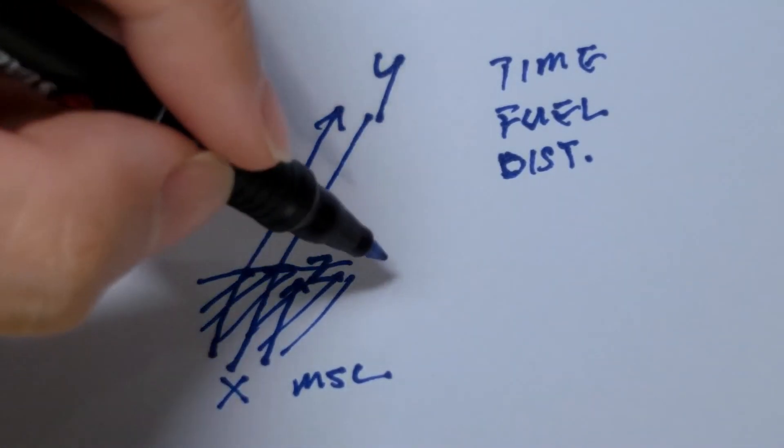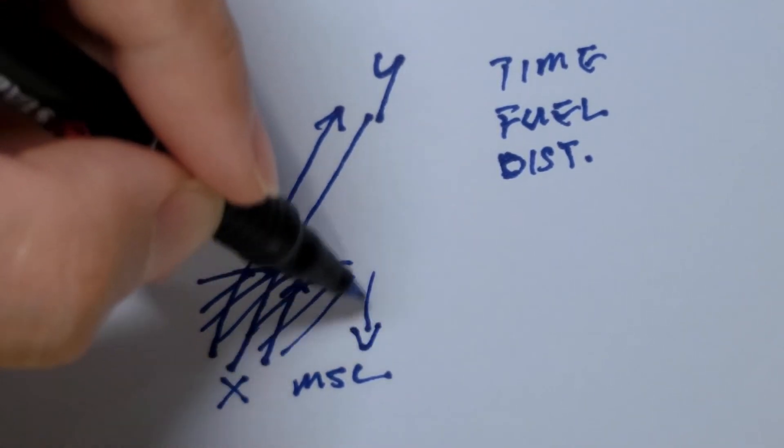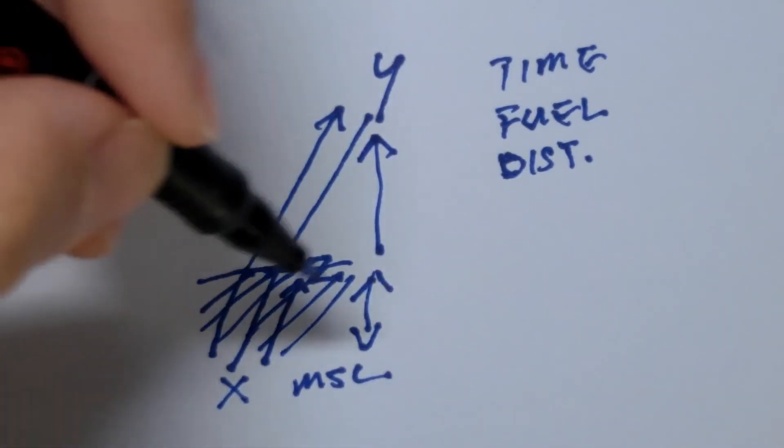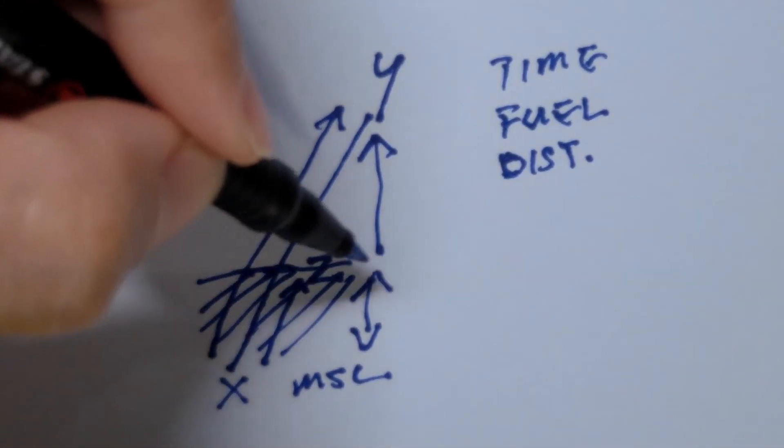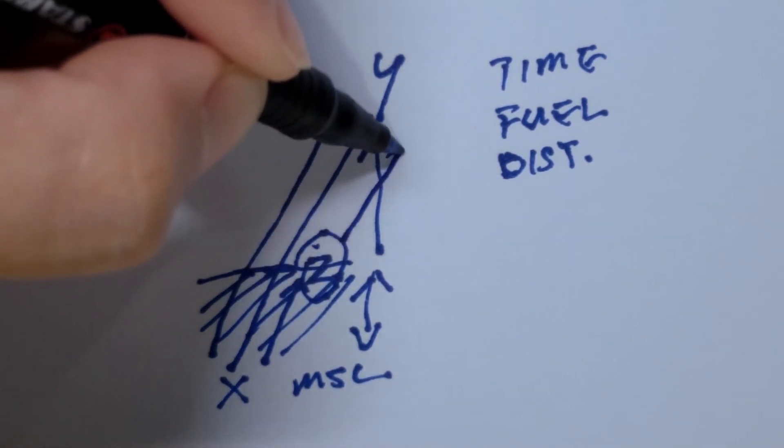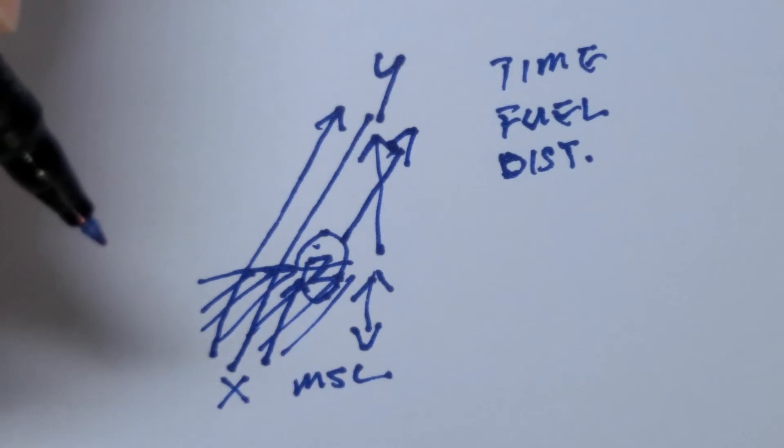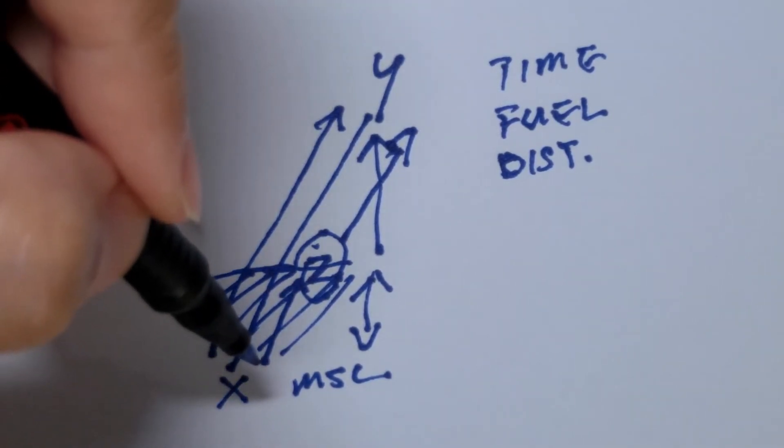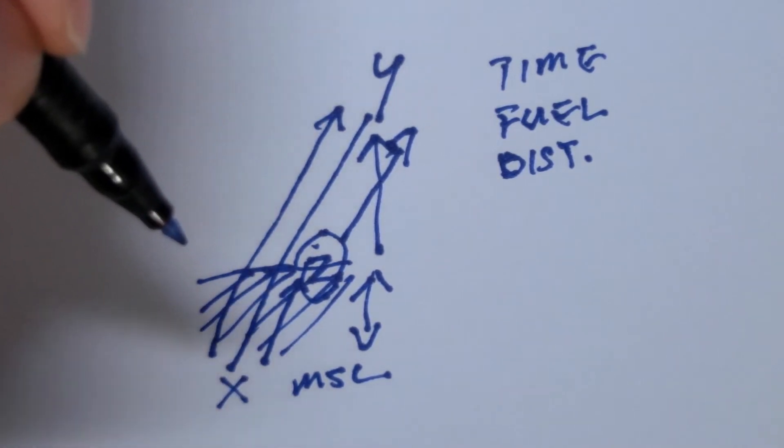So what we are going to do later on is we are going to take this value and subtract it from that value. And then we would get the values for an airport at Z that climbs all the way up to Y. So we are actually doing two separate calculations both from mean sea level and we are subtracting the smaller one from the larger one.